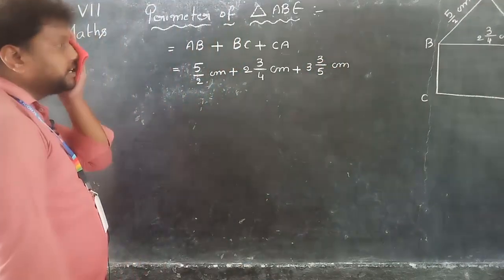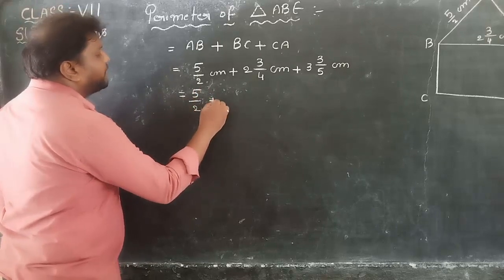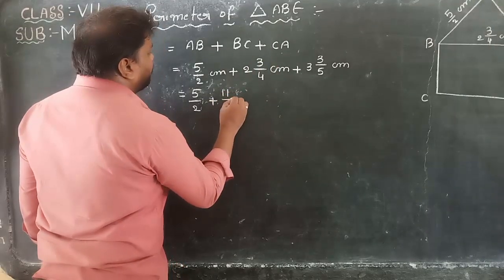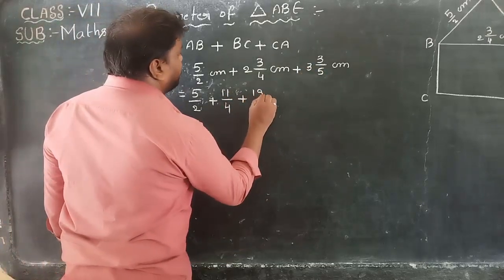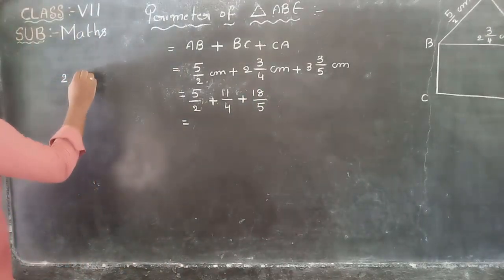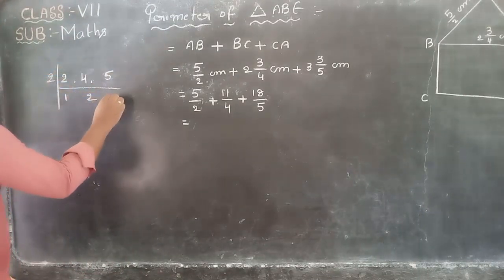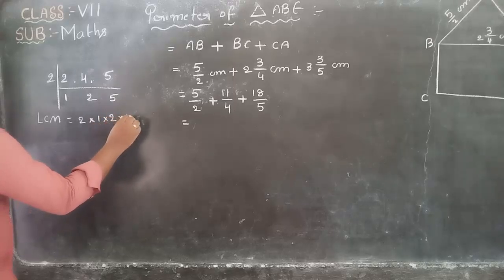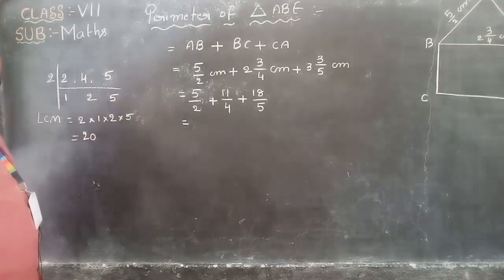So perimeter = 5/2 plus 2 and 3/4 plus 3 and 3/5. Convert mixed fractions to improper fractions: 2 and 3/4 = 11/4, and 3 and 3/5 = 18/5. Now take LCM of denominators 2, 4, 5. LCM equals 2 times 1 times 2 times 5 = 20. The common denominator is 20.